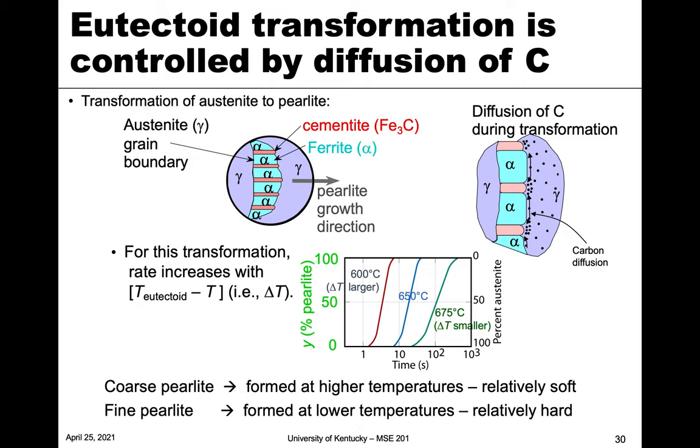The other part of this is that this pearlite, these bands of alpha and Fe3C, can also change width. When it grows at relatively high temperatures, like 675, we form what's known as coarse pearlite. Because at the higher temperatures, diffusion's faster, and so the widths can be greater because carbon diffusion happens at a higher rate. So we have coarse or thick layers of pearlite, as opposed to lower temperatures where diffusion is relatively slow. These bands have to be very thin so that diffusion can occur. This is fine pearlite when the bands are thinner and it happens at lower temperatures. These also have implications for the mechanical properties.